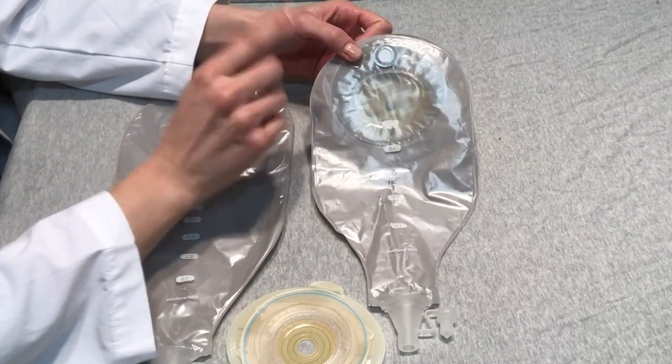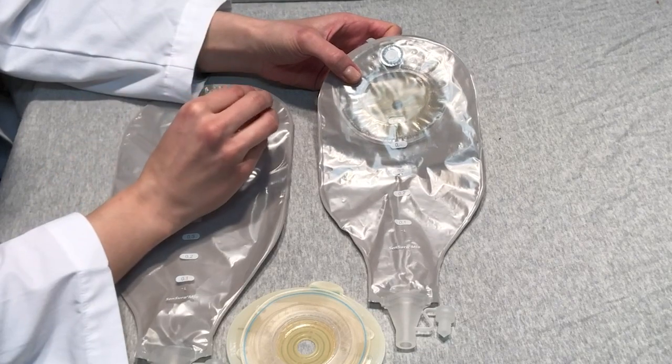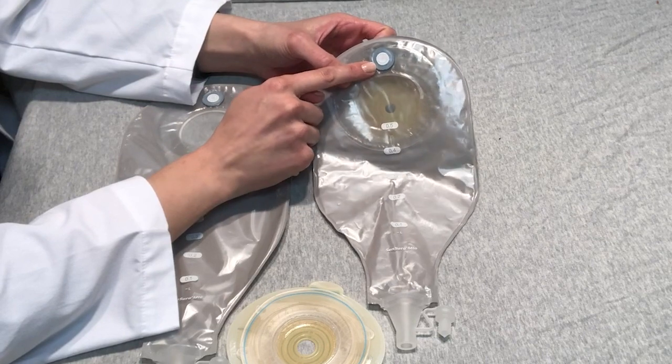This is our pre-filter. This helps catch any thicker particles in the stool, in the high output ileostomy stool. That will help prevent our charcoal filter from getting clogged up quickly.